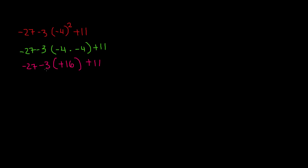The next thing we have to do is distribute this negative 3 to the positive 16. If it's a negative and a positive, a negative times a positive always gives us a negative. So we have negative 27, and then negative 3 times positive 16 gives us negative 48, plus 11.